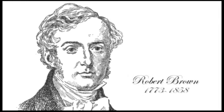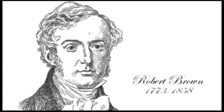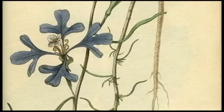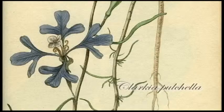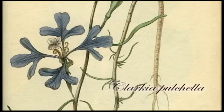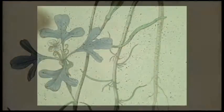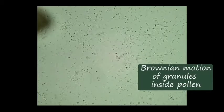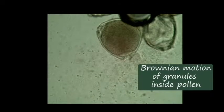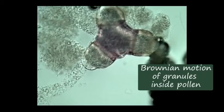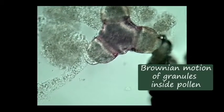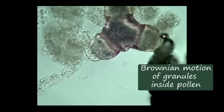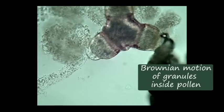The Brownian dance has been around for a long time. It was first found by Robert Brown — he was a microscopist, and he was looking at pollen grains, and he saw these particles moving around. This is a pollen grain of the genus Clarkia, apparently the species that Brown saw in the late 1820s.